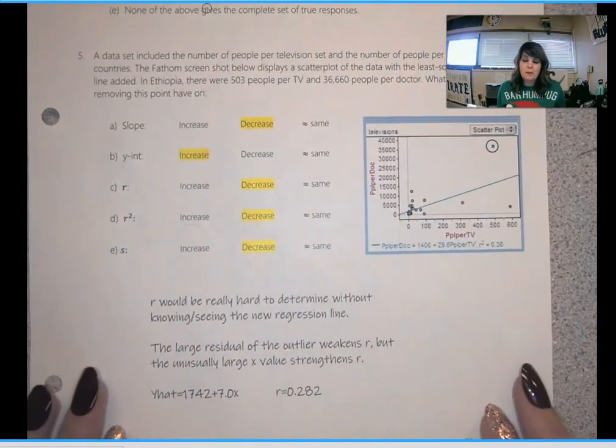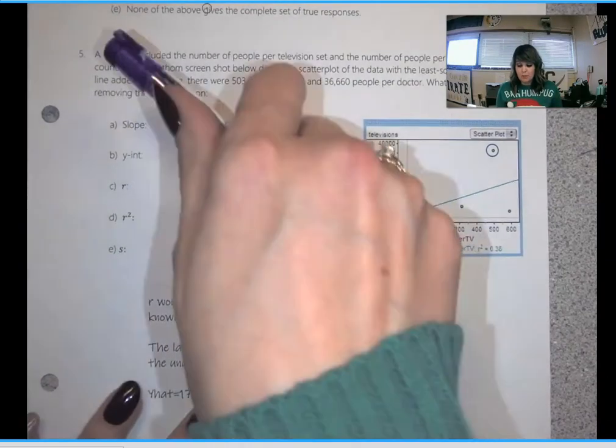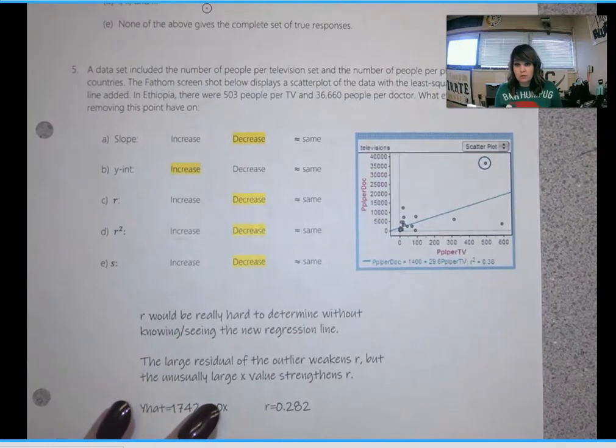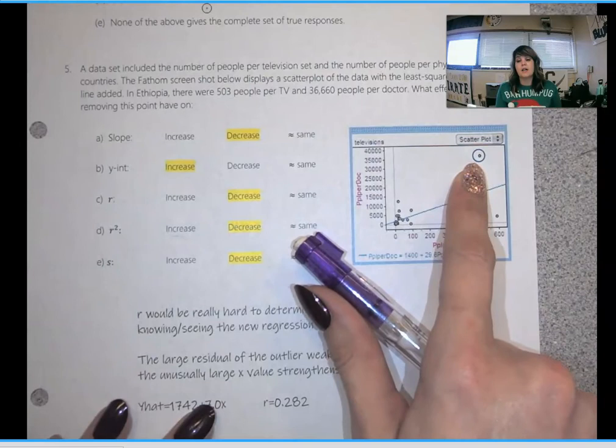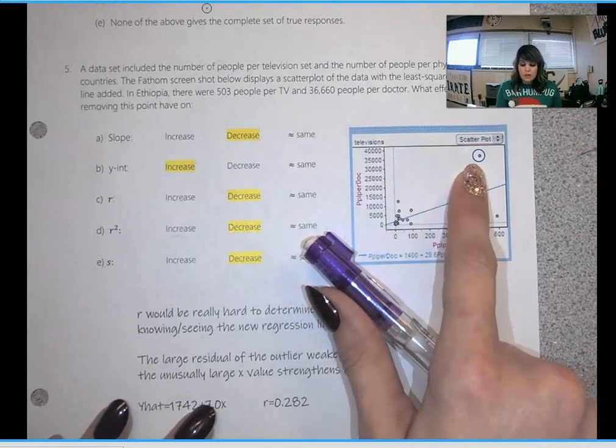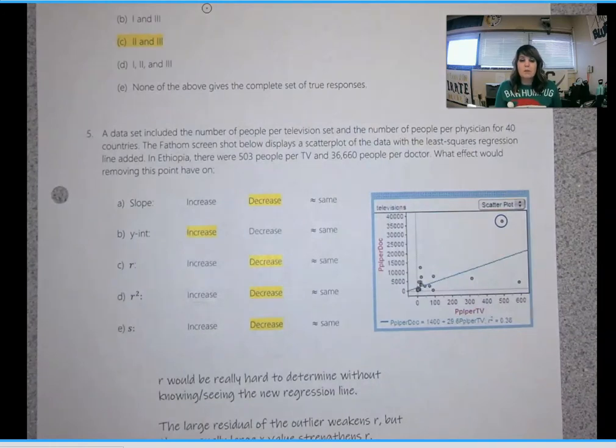Number 5 was a big challenge for me. In fact, it was so big that I had to Google this problem. I legitimately put this whole paragraph into Google. I found the data set that goes with this scatter plot and took this point out because I was having such a hard time deciding what happened to some of these values. So if you're in the A days, you didn't get this set up. So I'll read it to you. A data set included the number of people per television set and the number of people per physician for 40 countries. The fathom screenshot below displays a scatter plot of the data with the least squares regression line added. In Ethiopia, there were 503 people per TV and 36,660 people per doctor.